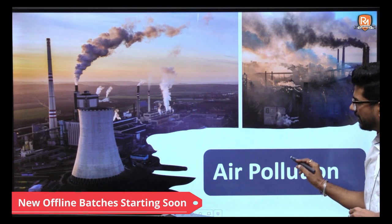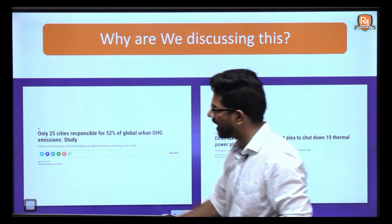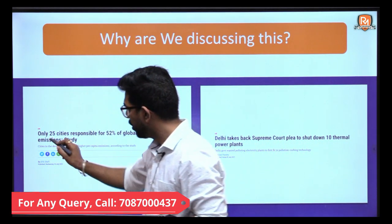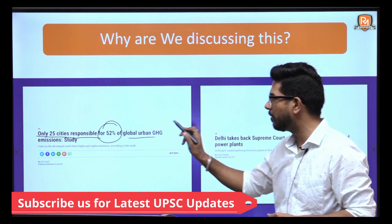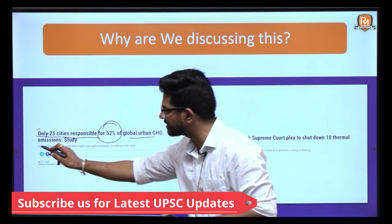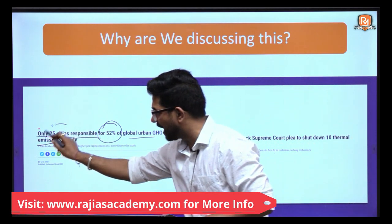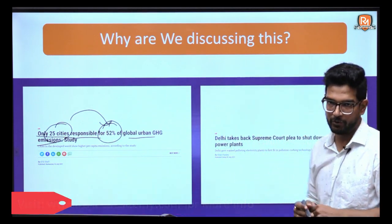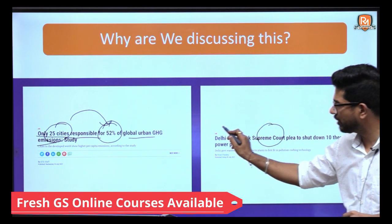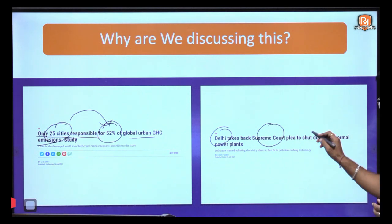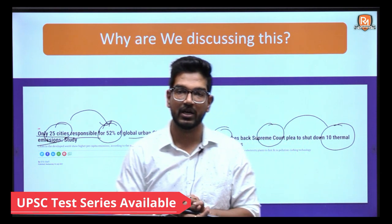What is the relevance of this topic in our UPSC preparation? For example, if we talk about air pollution, recently there were two articles in Down to Earth magazine. One was: only 25 cities are responsible for 52% of global urban greenhouse gas emissions. And the other article says that the Supreme Court directed the Delhi Government regarding a petition to shut down 10 thermal power plants in the NCR region.